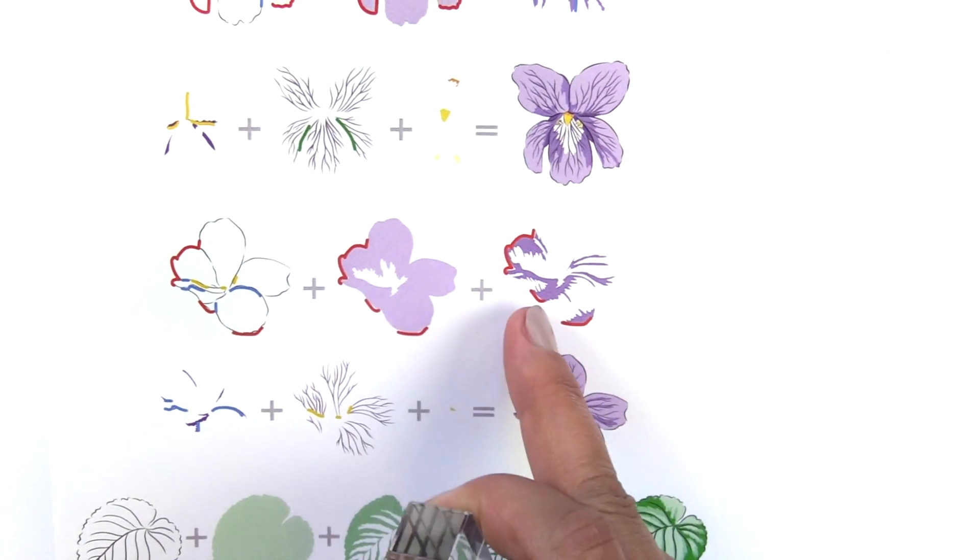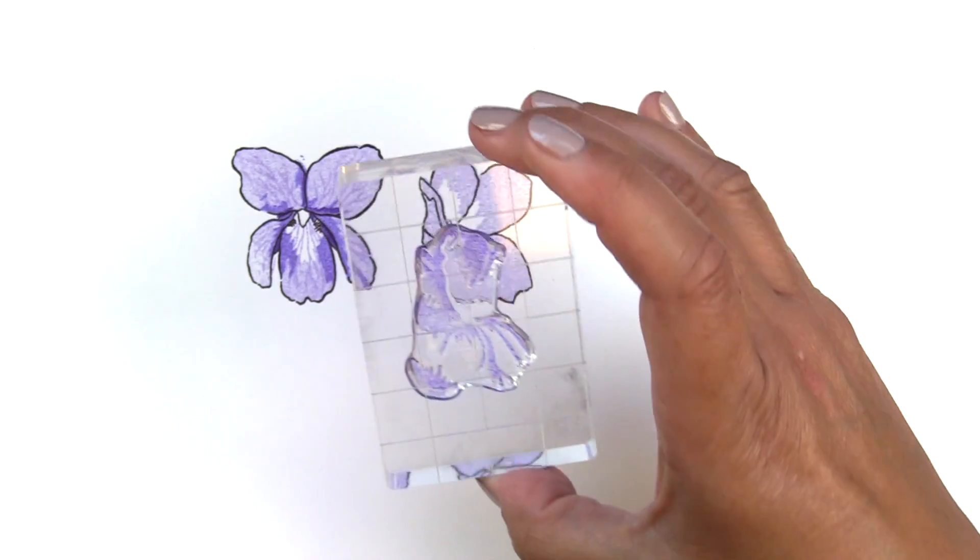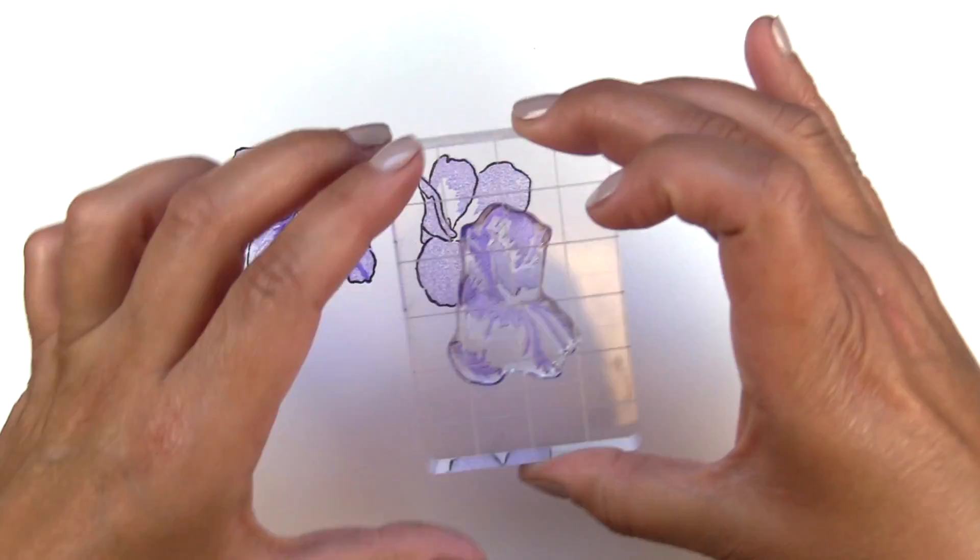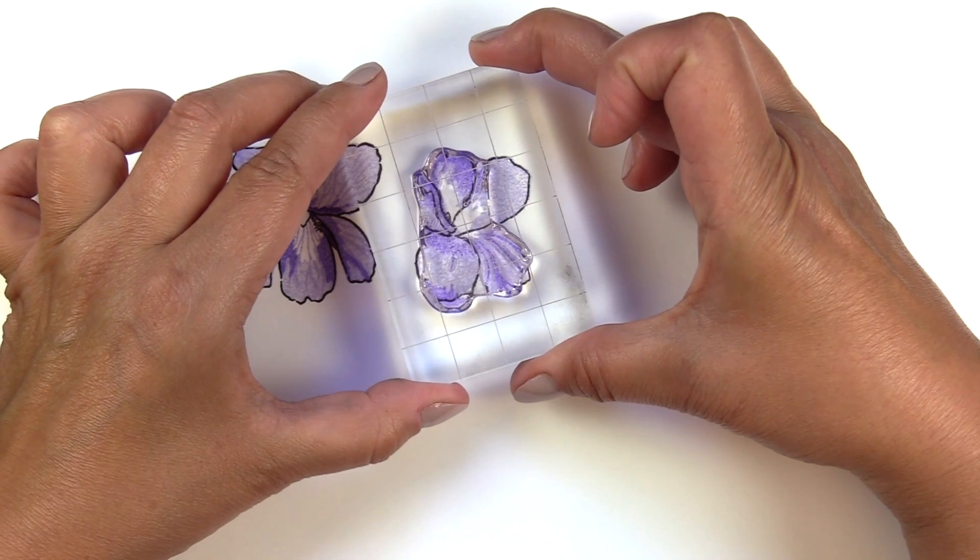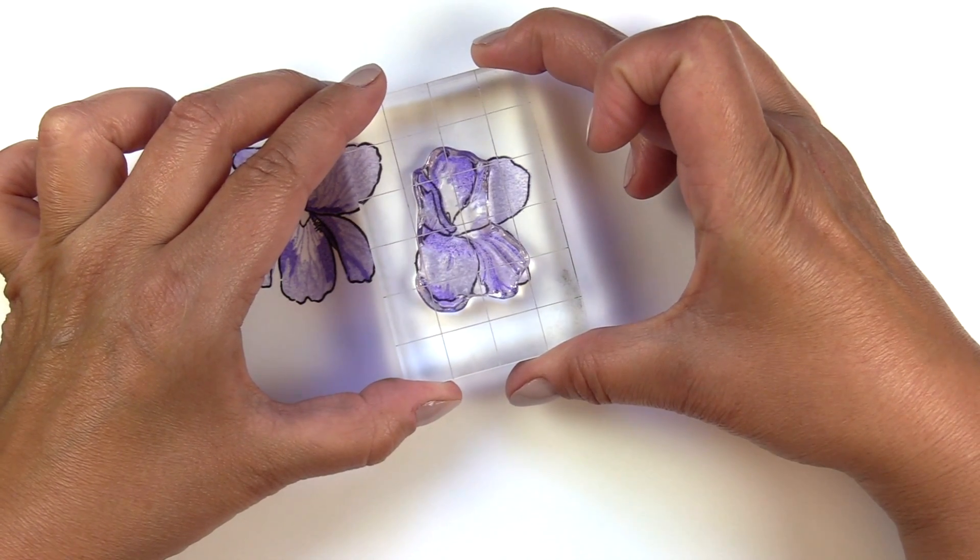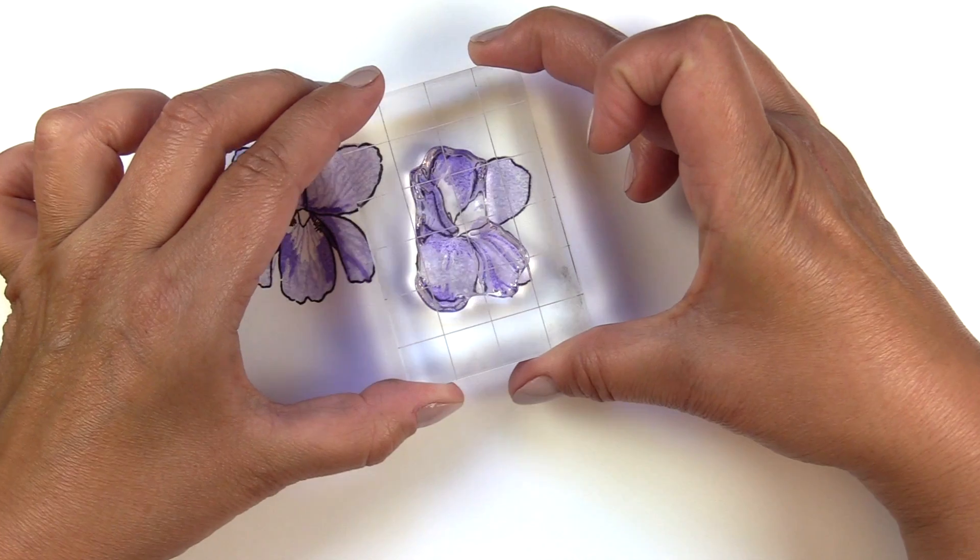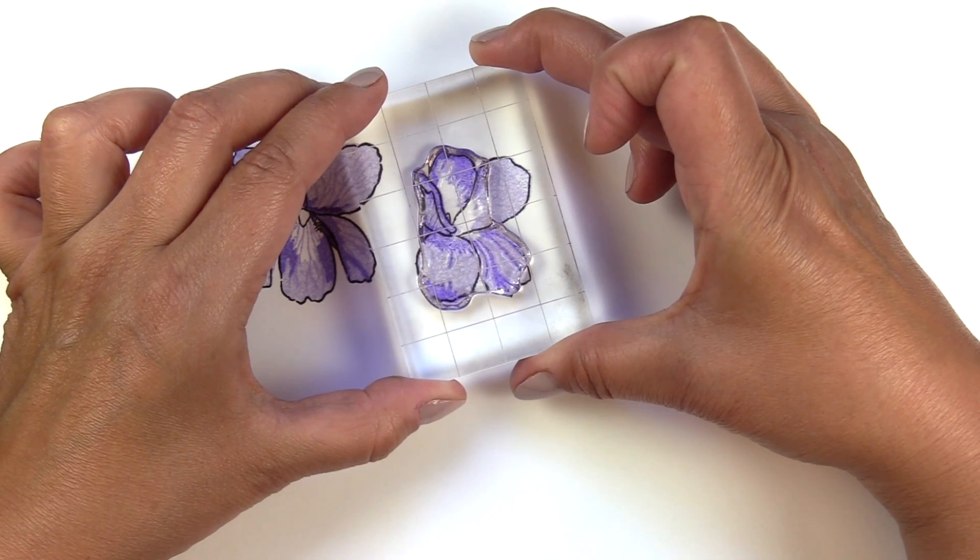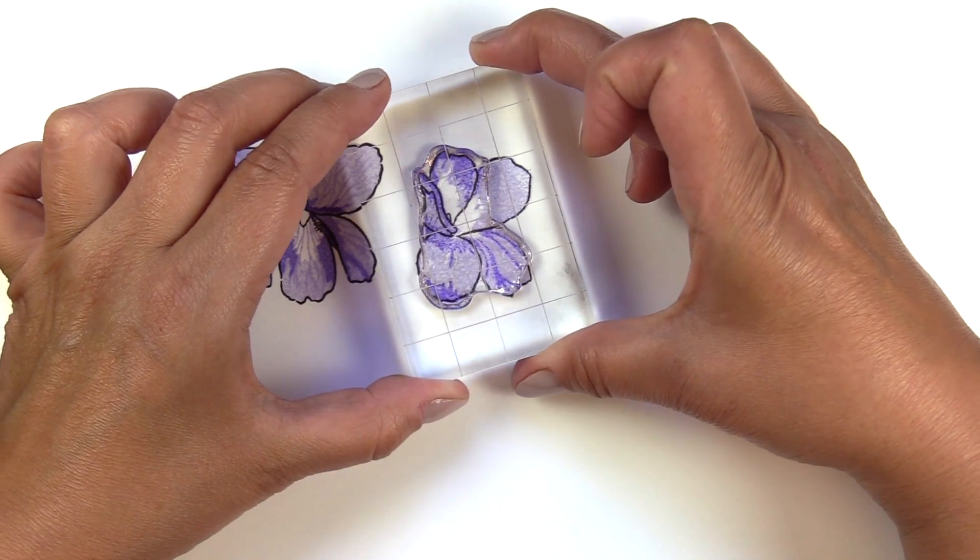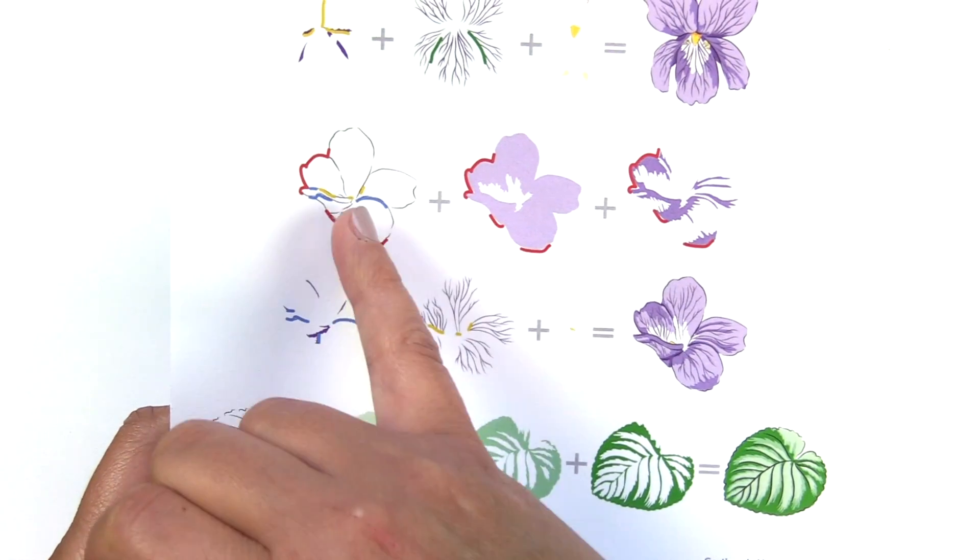The next layer will line up that bottom right corner and it may be easiest for you the first time stamping to align your stamps exactly the way that it is on the layering guide. If you're having difficulty with any of the layering stamp sets, try that. Try lining it up like it is on the guide.